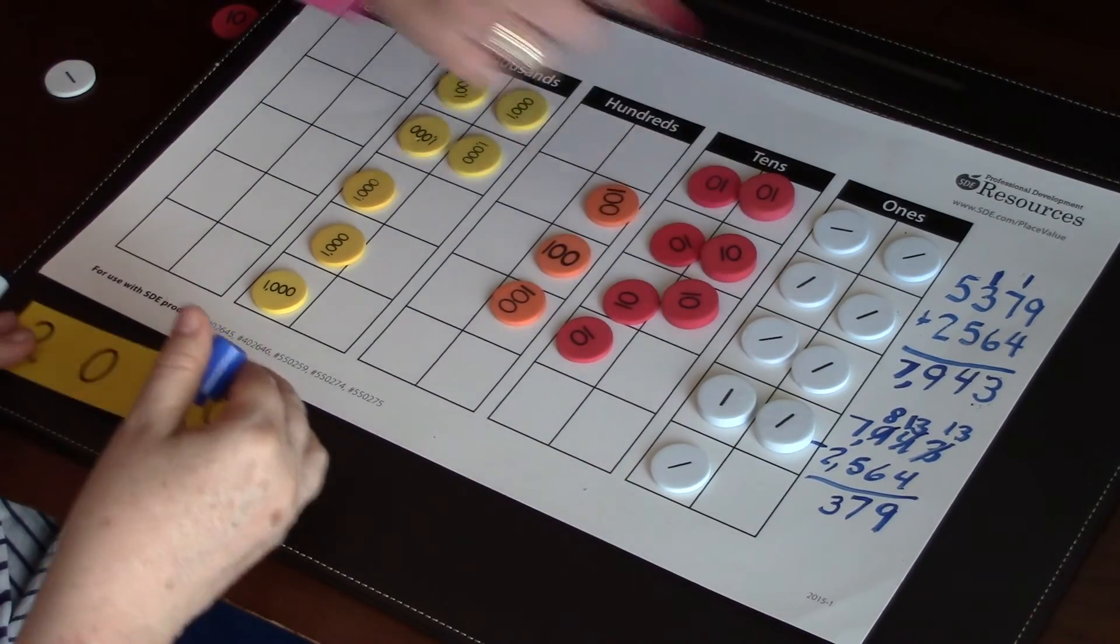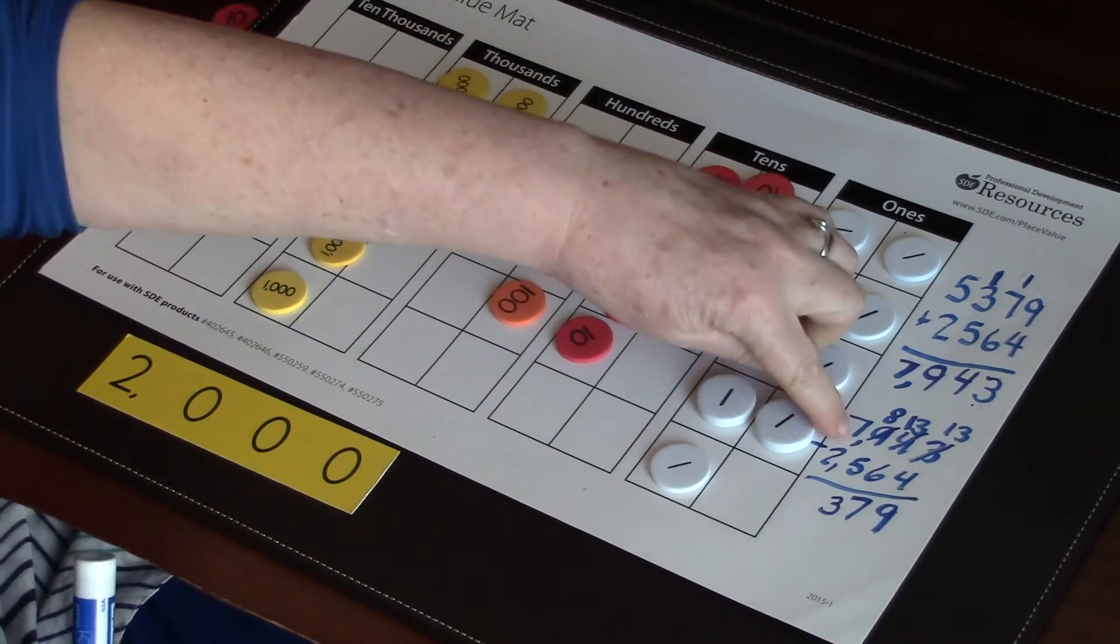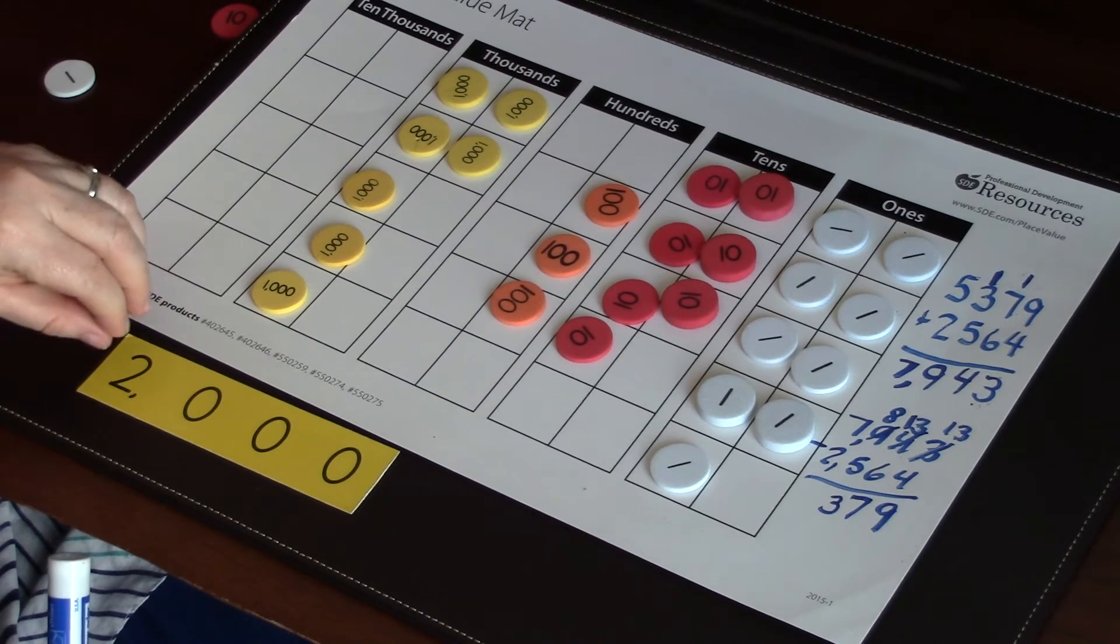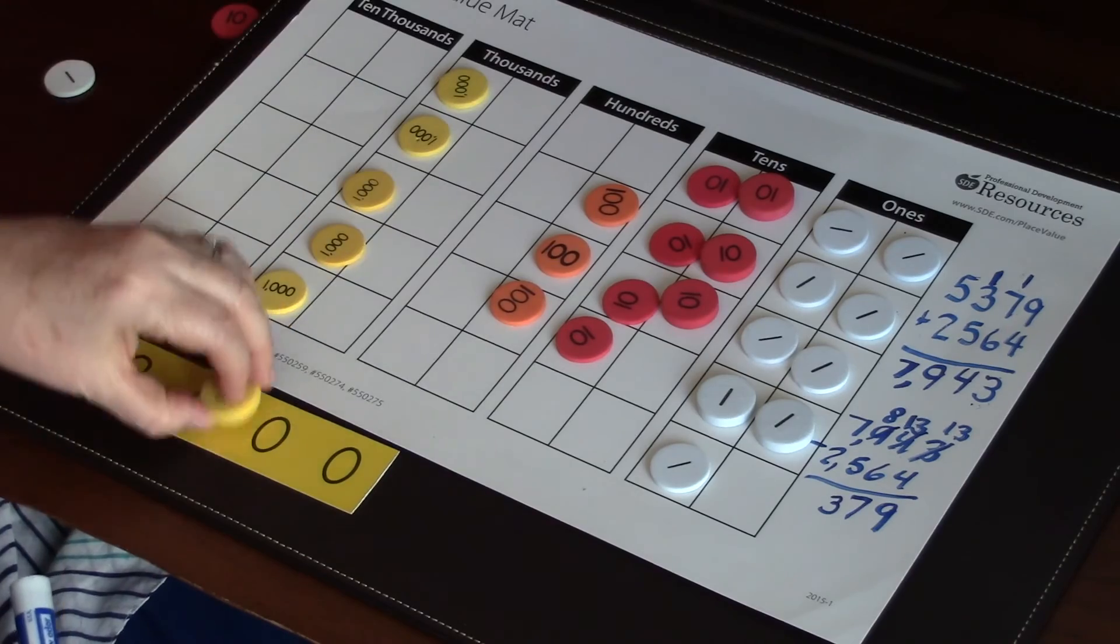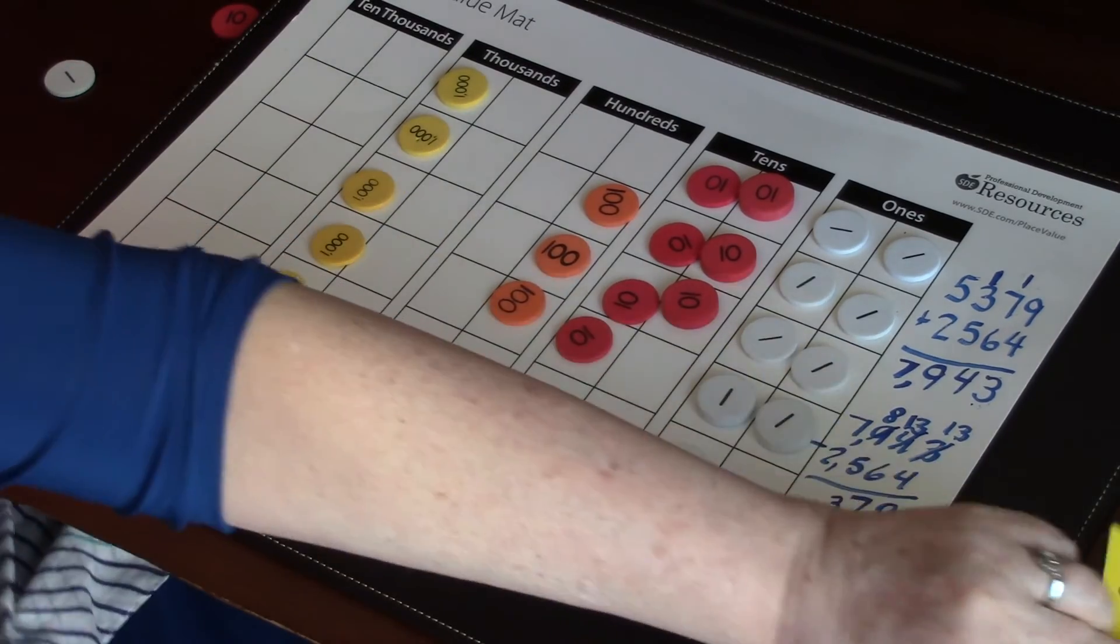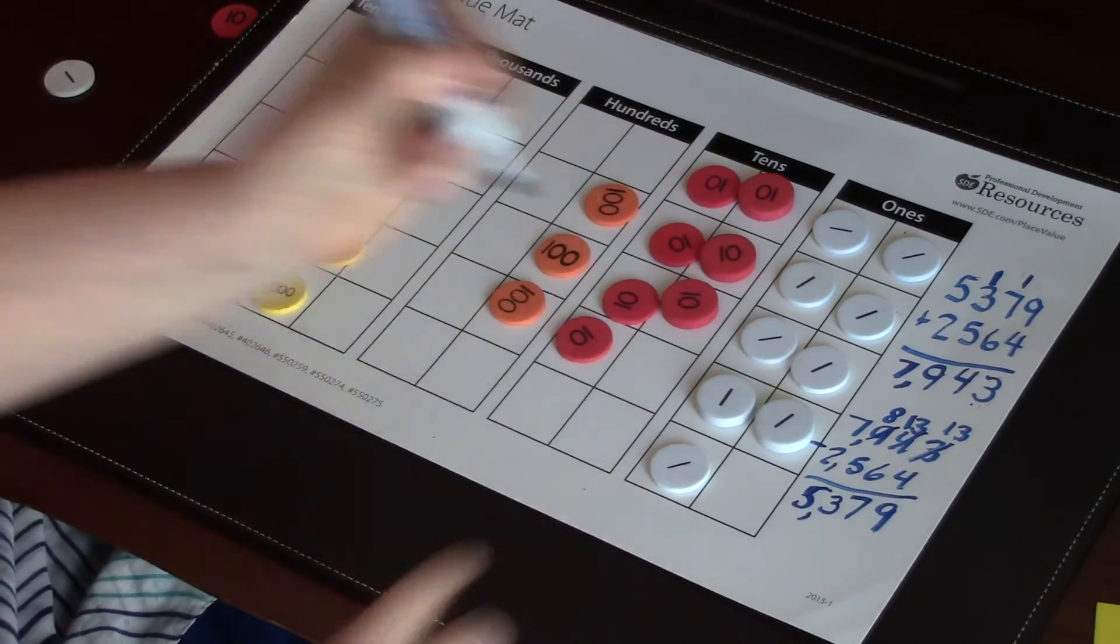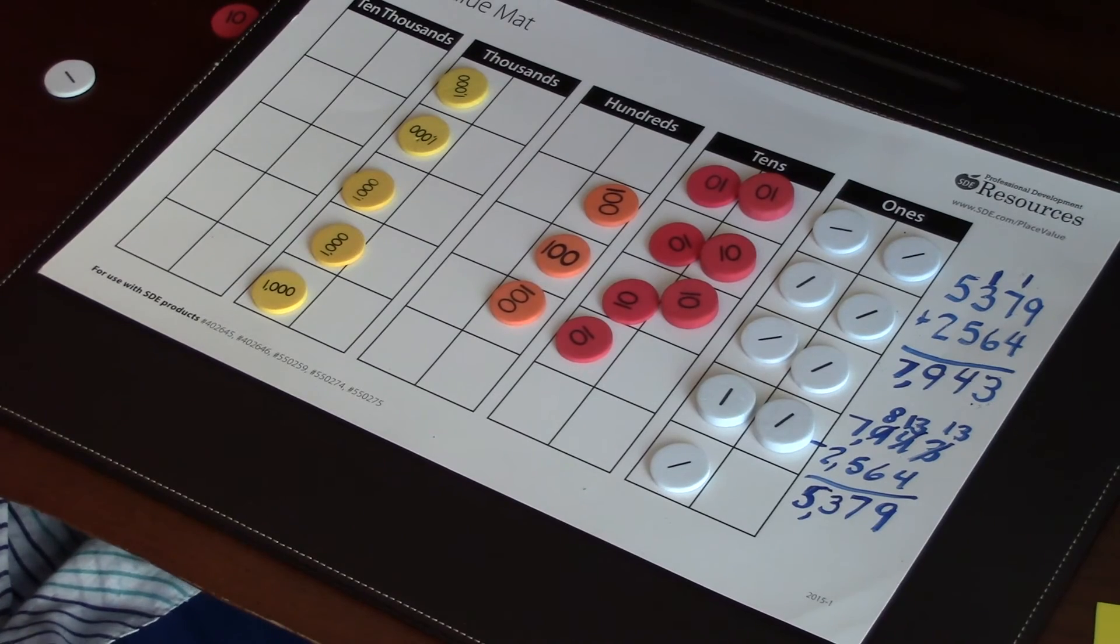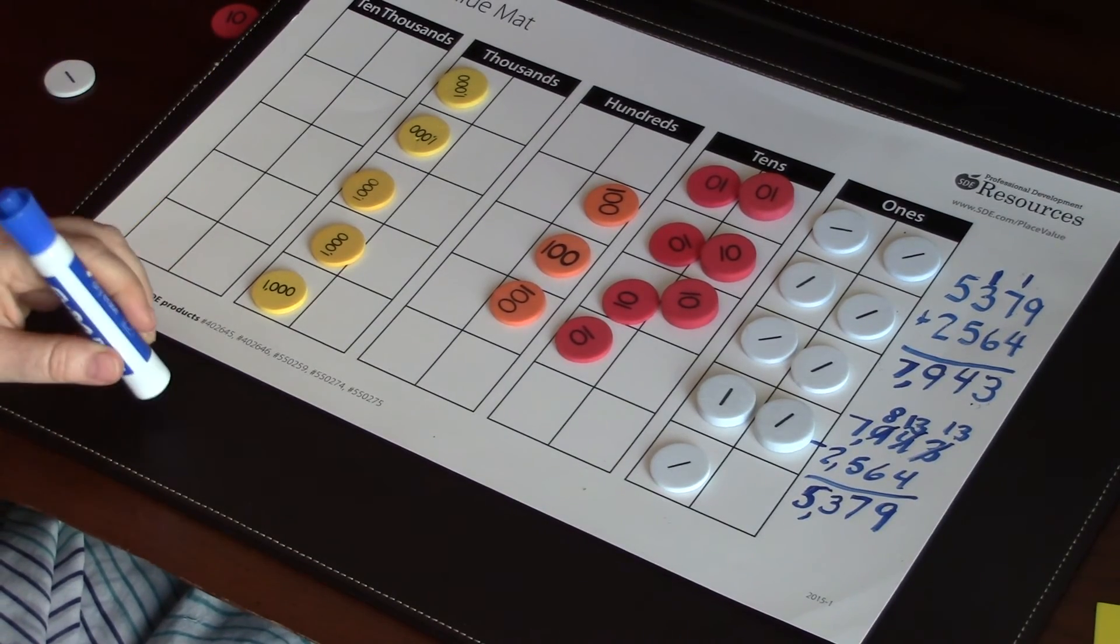So now when we go to our thousands place, how many thousands do we have? It says I have seven here. And how many do we need to take away? I need to take away two thousand, so I'm going to take away two of these. And how many thousands does that leave us with? Five. Oh my gosh, look! It's the same thing! So we can use that to show that inverse with addition and subtraction.